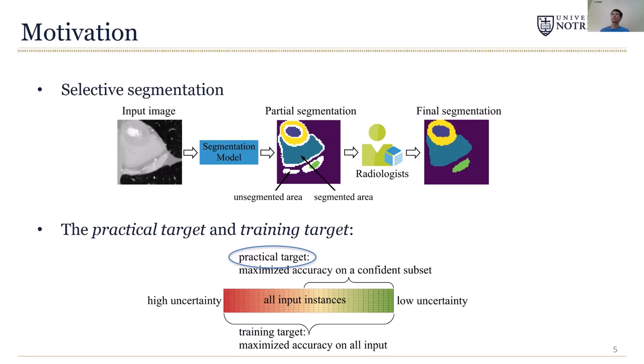So practically, only the accuracy at the confident subset matters. We expect that if we can directly optimize for the practical target, it will provide higher accuracy. Therefore, in this work, we want to find a way to bridge this gap.